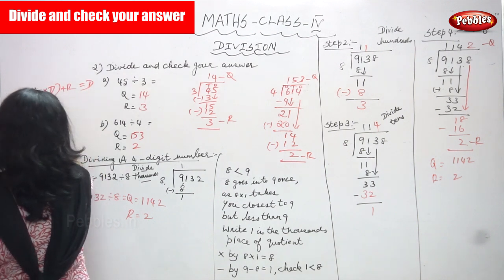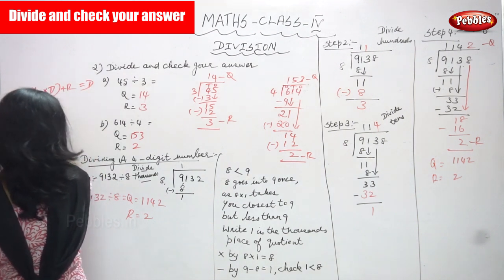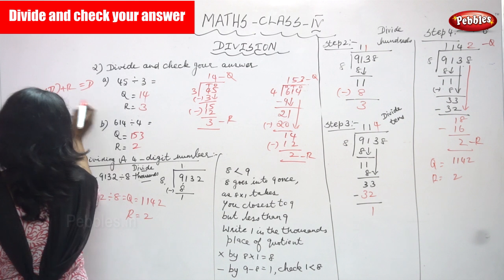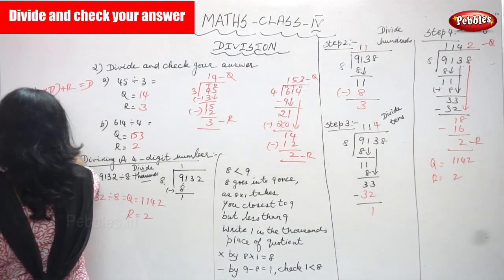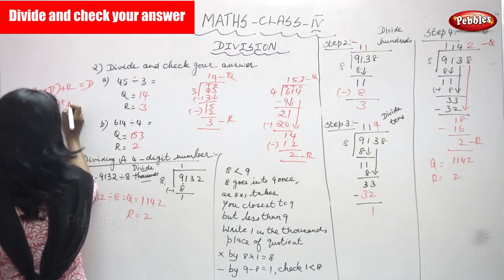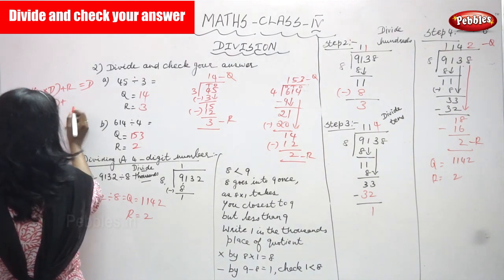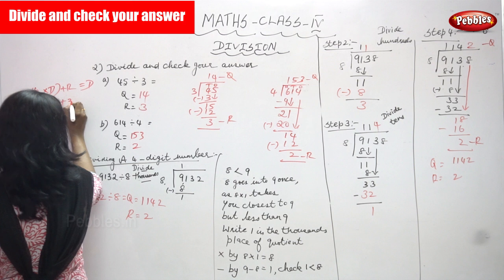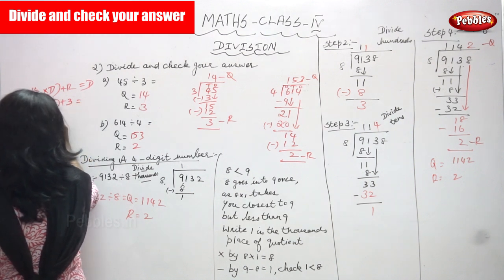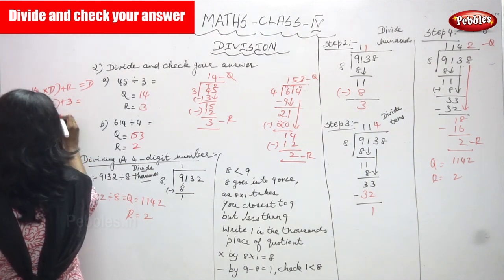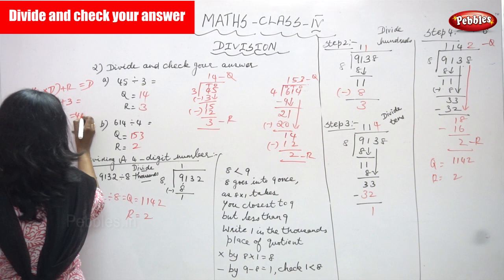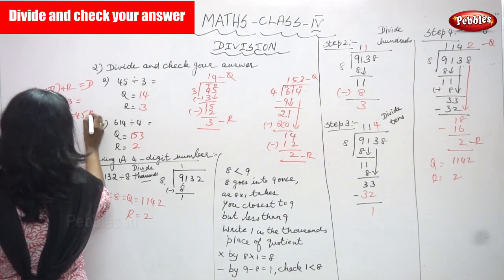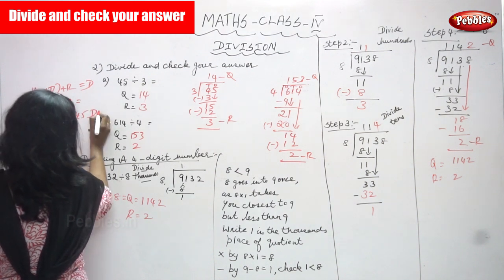For the first sum, the quotient is 14 and the divisor is 3, with a remainder of 3. So 14 into 3 gives 42. Then 42 plus 3 gives 45 — that is the dividend.